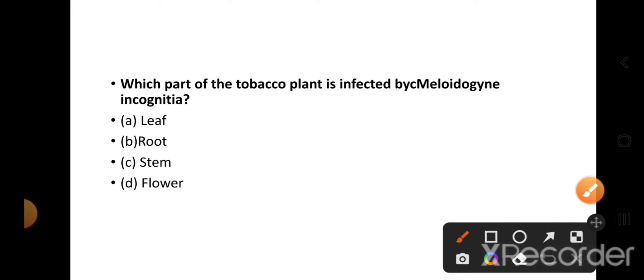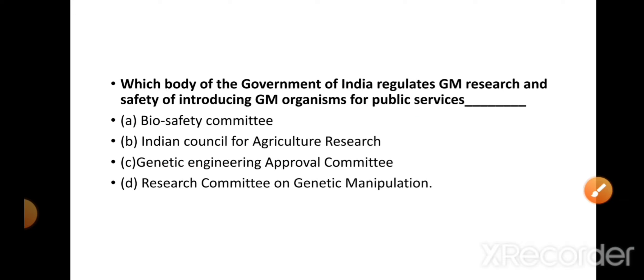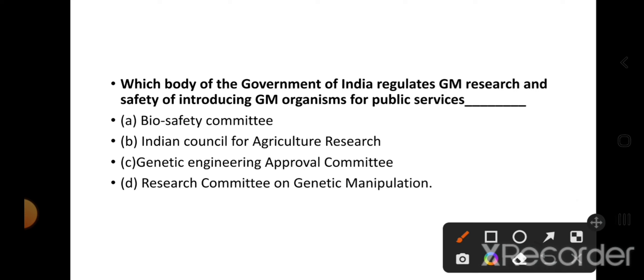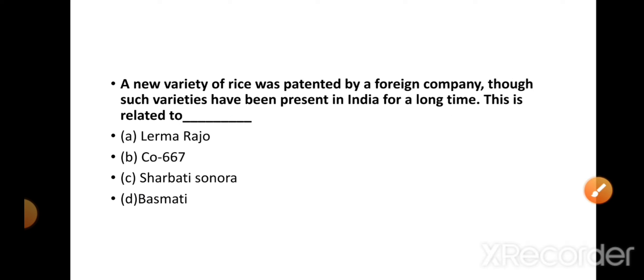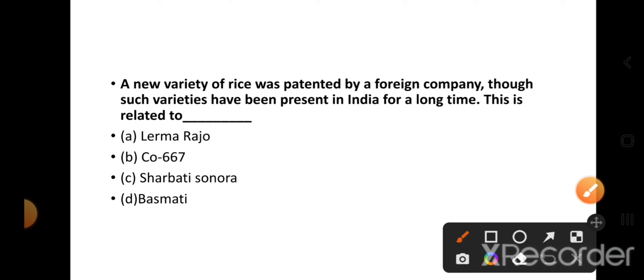Which part of the tobacco plant is infected by Meloidogyne incognita? This is a nematode - when it infects tobacco plant, it causes root knot disease in the roots. Which body of the government of India regulates GM research and safety of introducing GM organisms for public services? This is the Genetic Engineering Approval Committee, the right answer. A new variety of rice patented by a foreign company, though such varieties have been present in India for a long time - the answer is Basmati.